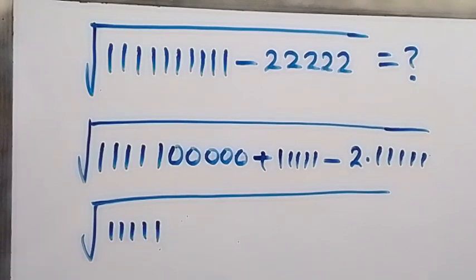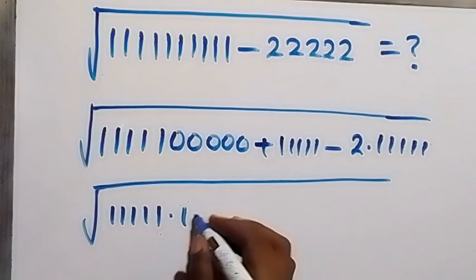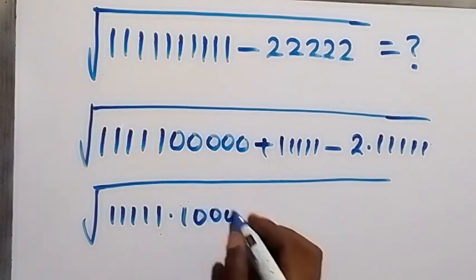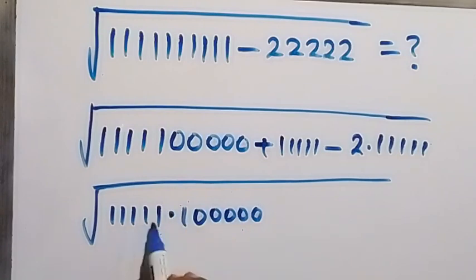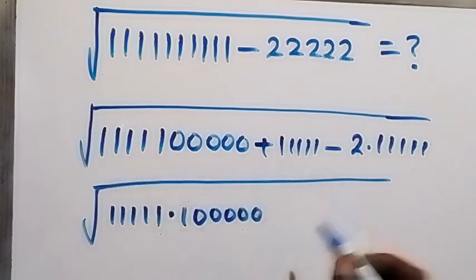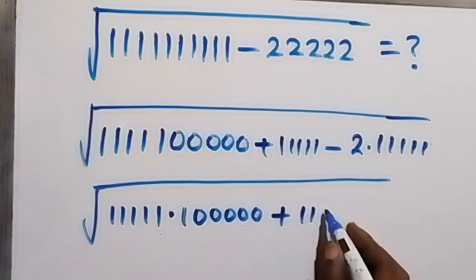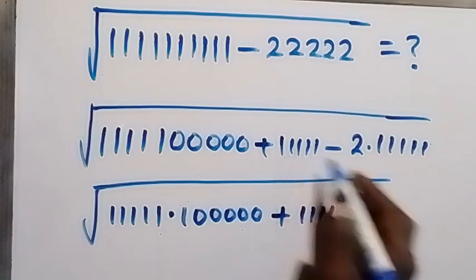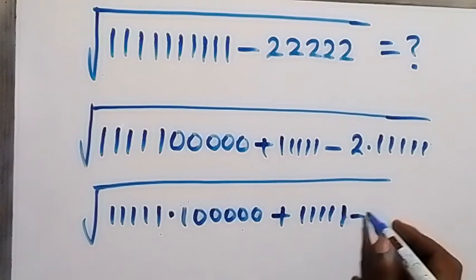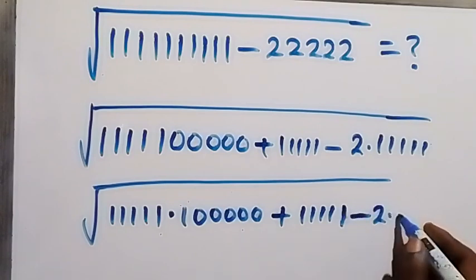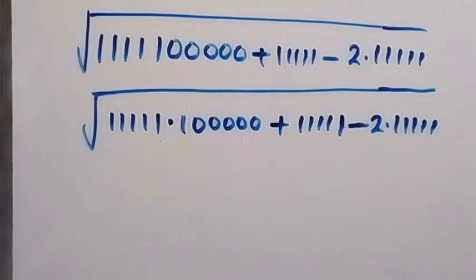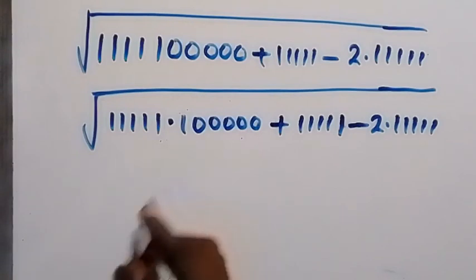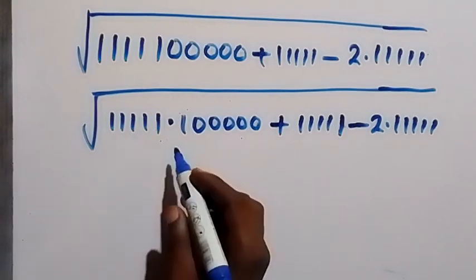That is multiplied by 1 0 0 0 0 0 — five zeros here — and when we multiply by the five ones this gives us our number back. Then plus 1 1 1 1 1 — five ones, the same as before — then minus 2 times 1 1 1 1 1. We can write it that way. Now let's represent 1 1 1 1 1 with a letter.